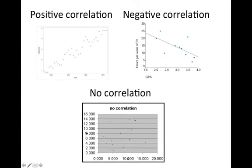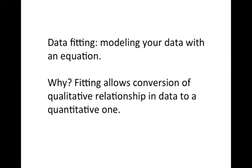When two variables show a correlation, the next step is to try to fit the data. What does data fitting mean? What it means is that we want to see if the shape of that data can be modeled using an equation. Why do we do this? Fitting allows us to convert what we see as a qualitative relationship in the two variables to a quantitative one that's given by the equation.